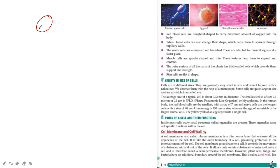Human sperm cell is oval at top with a tail at bottom. Egg cell is oval in shape. Smooth muscle cell is cylindrical in shape. And neuron has a unique shape which carries messages to our brain.